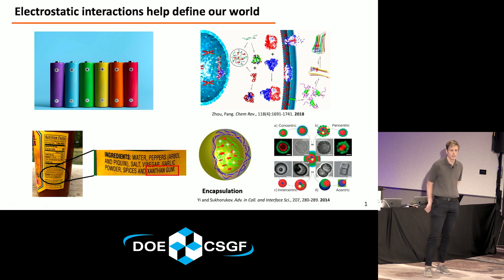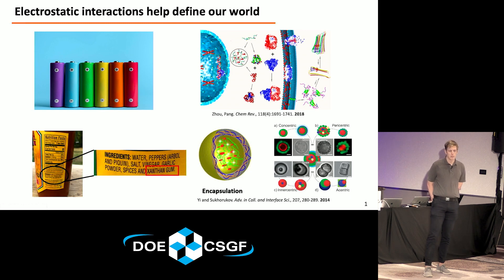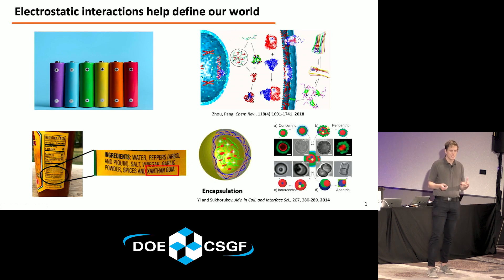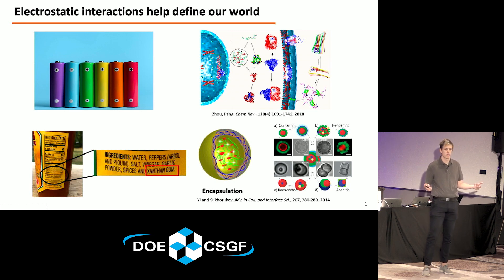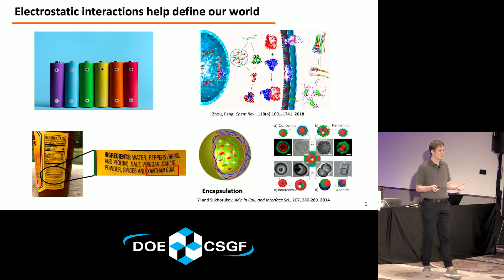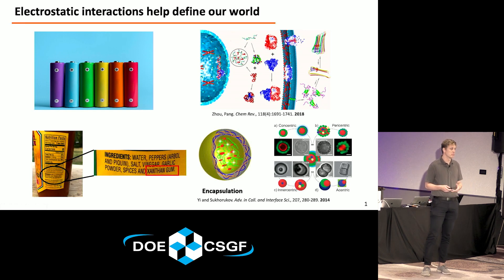Electrostatics at the nanometer scale underpin a lot of the technologies that we use every day. In charge systems, the biggest example is battery technology. In nature, we have proteins and things like DNA that are the building blocks of life — they contain charge and use that to regulate cellular processes, charged assembly, and structure at the molecular level. In less thought-of things such as food additives and personal care products, it's the electrostatics at the nanometer scale that drive the performance and affect the properties of those fluids or products.